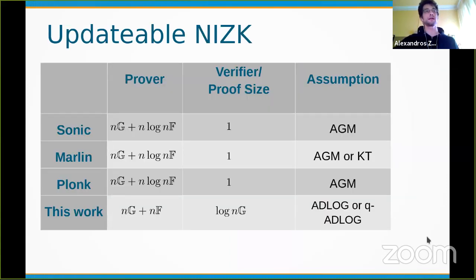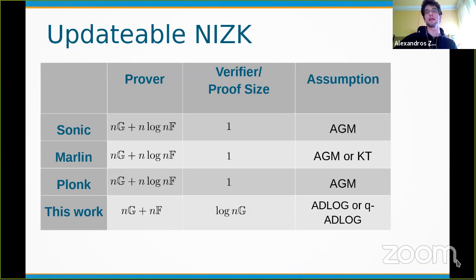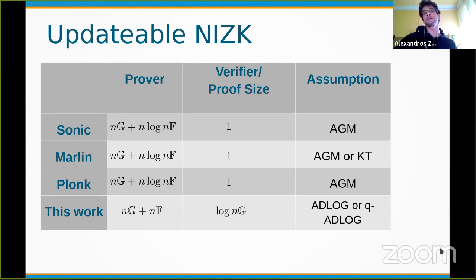The current state-of-the-art in the updatable model has quasi-linear prover time and constant proof size, relying on the random oracle model and either the algebraic group model or knowledge-type assumptions. We present two variations relying on the random oracle but more standard assumptions: one on the discrete logarithm assumption on asymmetric groups, and another on a q-type variant, trading optimal constant proof size for a logarithmic one.